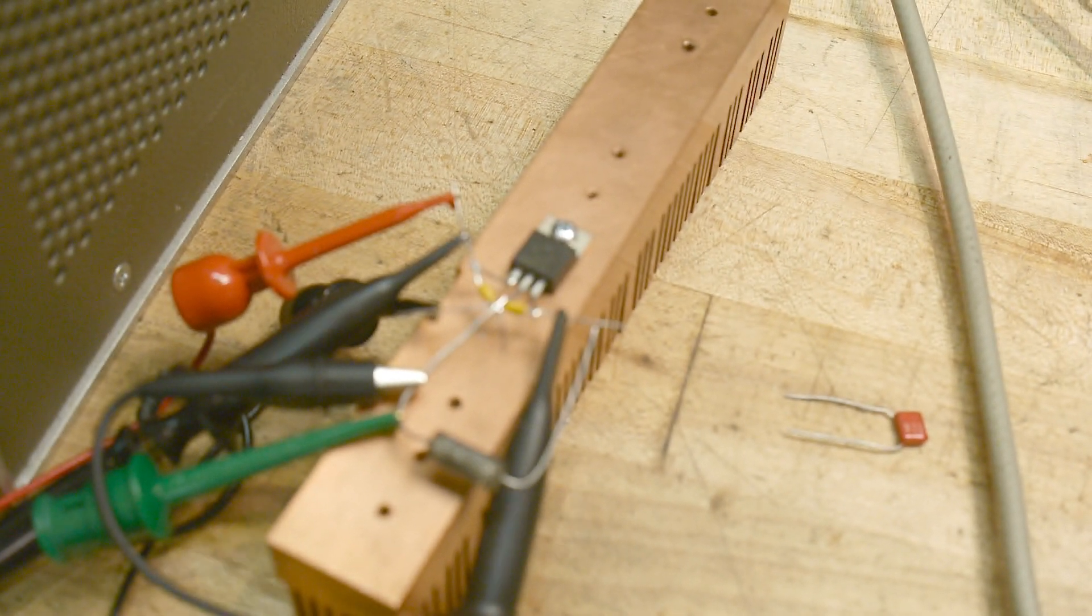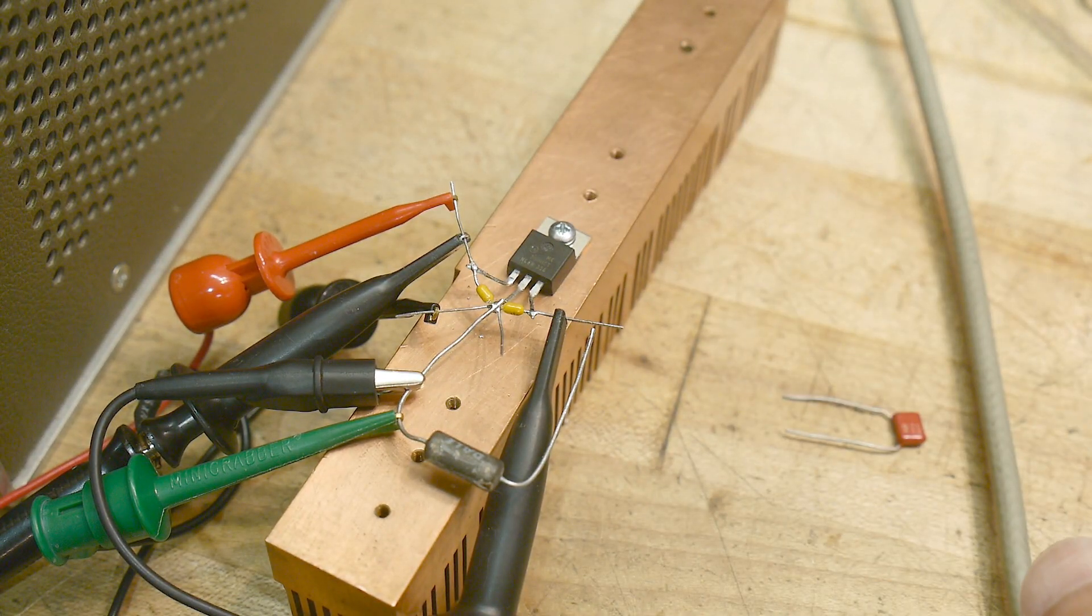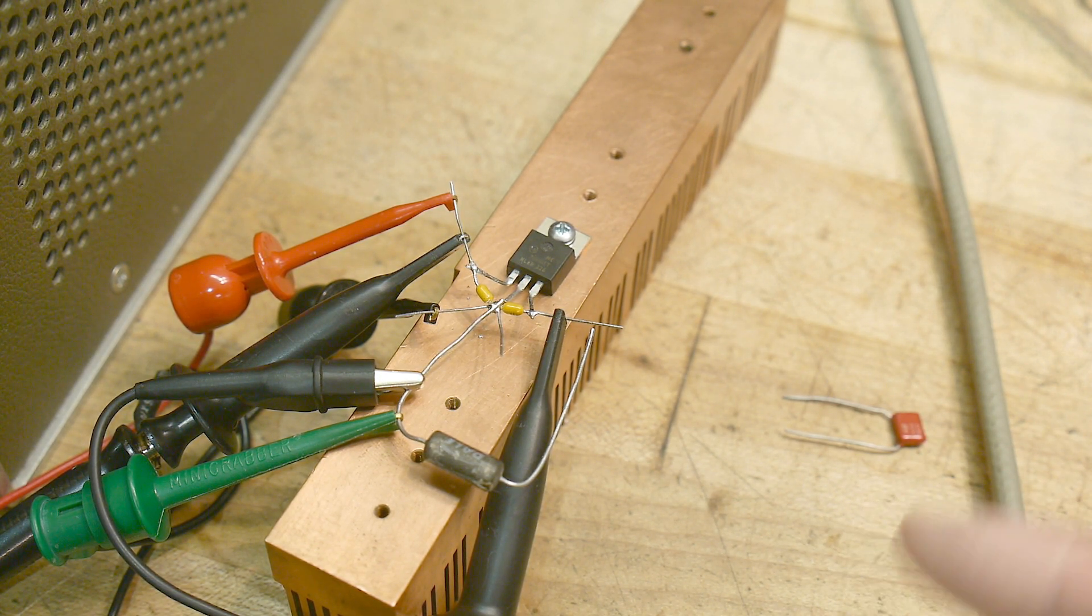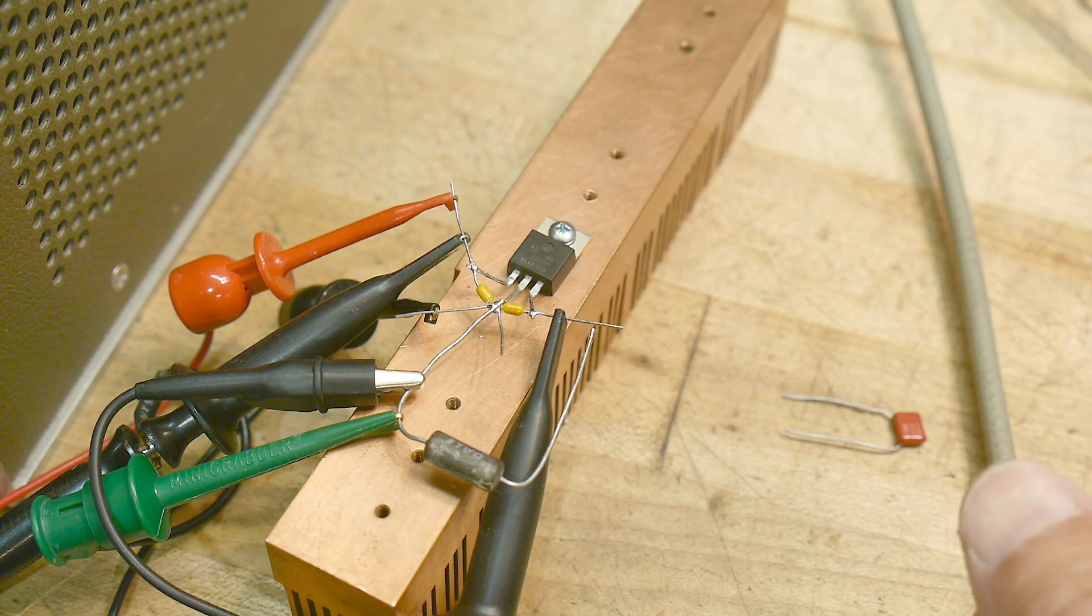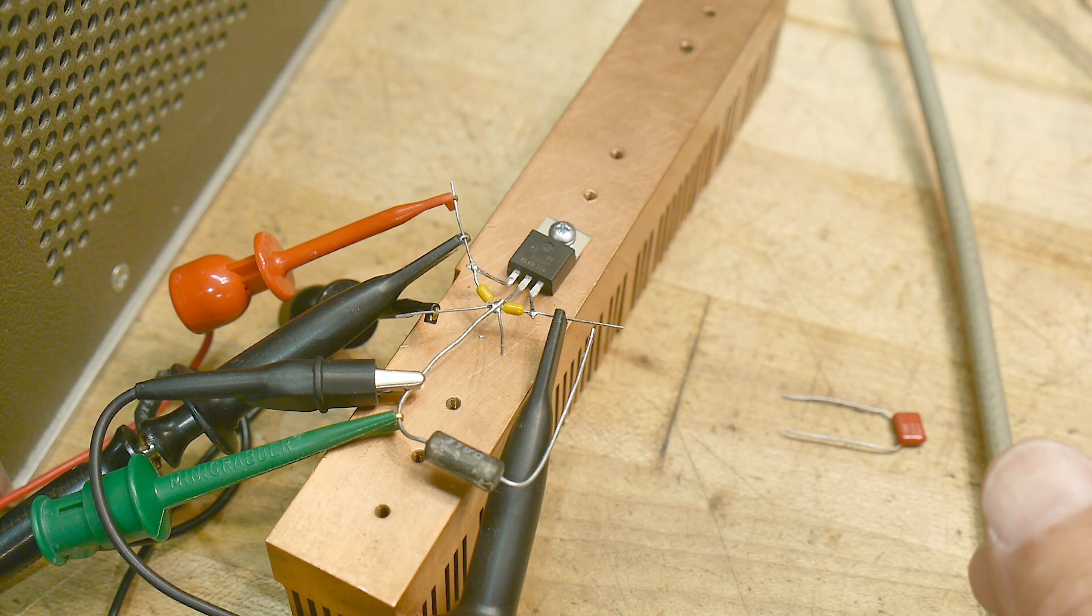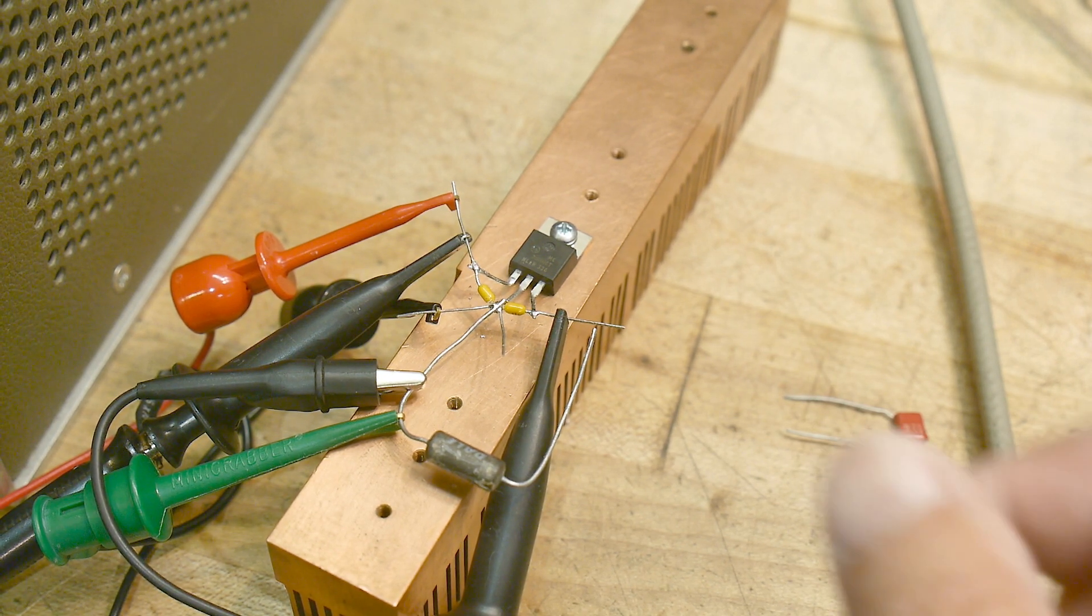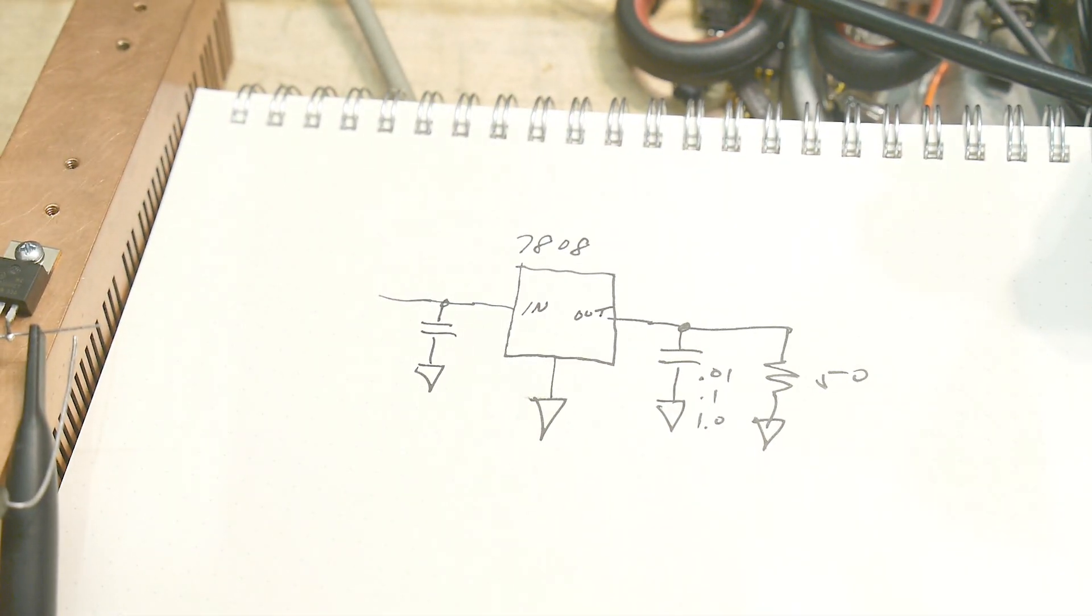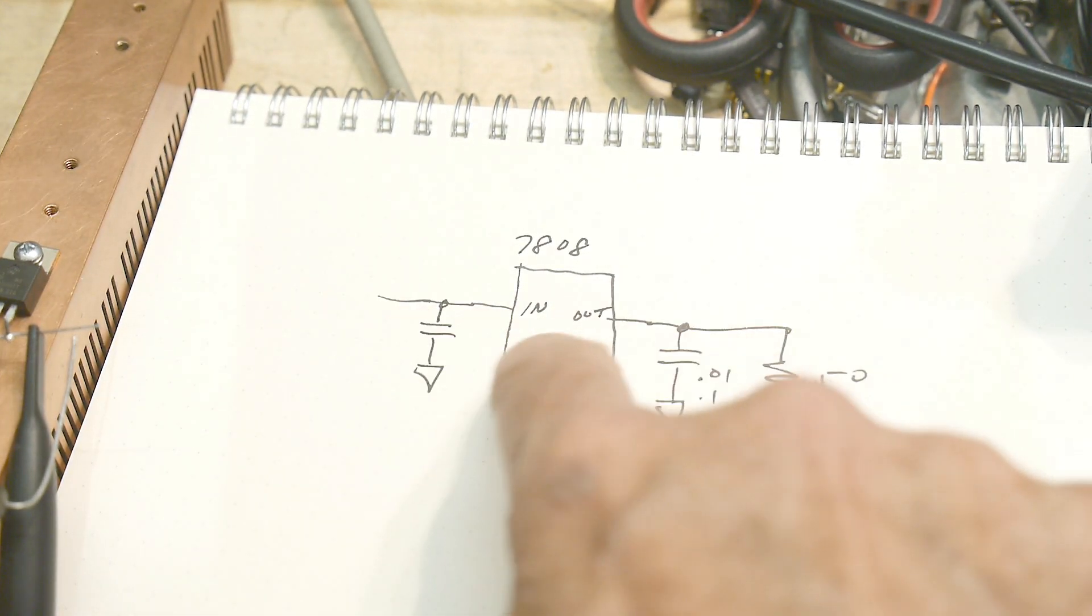So I think the moral of the story is: have enough capacitance on the output of your three-terminal regulators. Check the output with an oscilloscope when they're loaded. Most people just put a voltmeter on it and say, 'Hey, it's looking good.' You wouldn't see that high-frequency ripple just looking with a voltmeter. So yeah, that's interesting anyway.